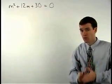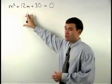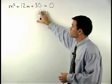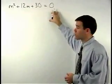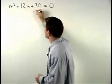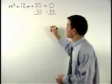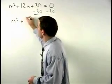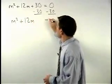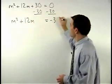In order to create a perfect square trinomial on the left side, we would first move this plus 30 over to the right by subtracting 30 from both sides of the equation, and we have m squared plus 12m equals negative 30.